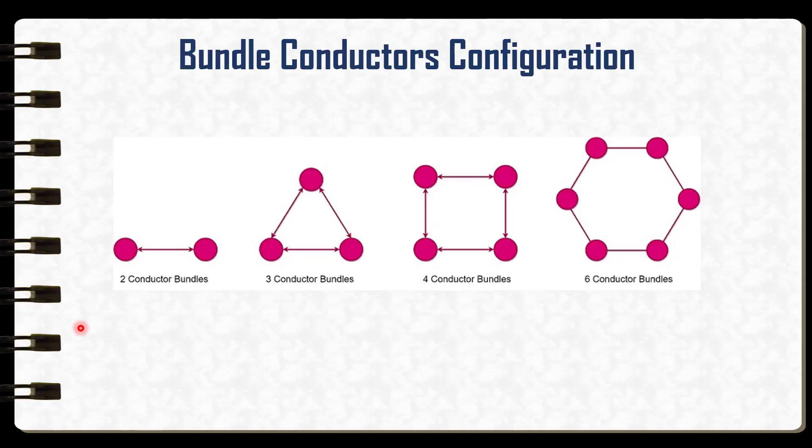So now let's look at the common arrangement of bundle conductors. At voltages around 200 to 400 kilovolts, a two conductor or three conductor bundle is usually sufficient. Each phase has either two or three conductors spaced apart with spacers.